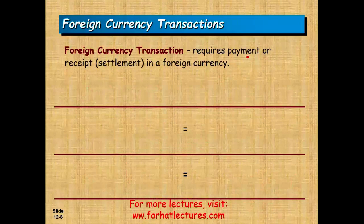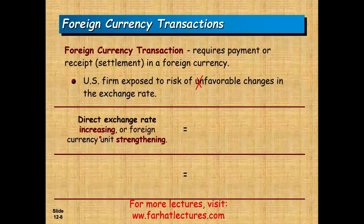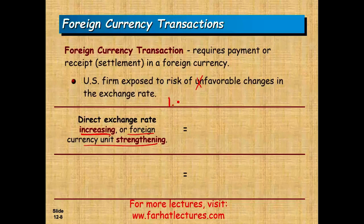Foreign currency transactions require payment or receipts in foreign currency, exposing U.S. firms to the risk of unfavorable changes in exchange rates — though changes can be favorable too. If the direct exchange rate increases, meaning the foreign currency strengthened, and the spot rate was $1.30 to buy one euro, then if you have a payable you'd initially need $130,000 for 100,000 euros.